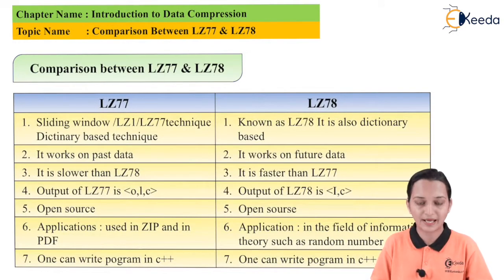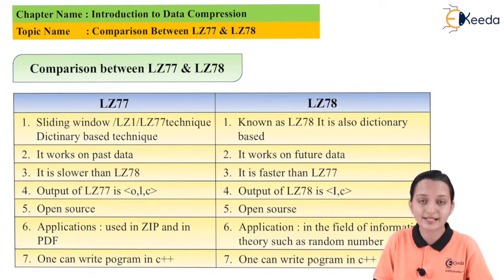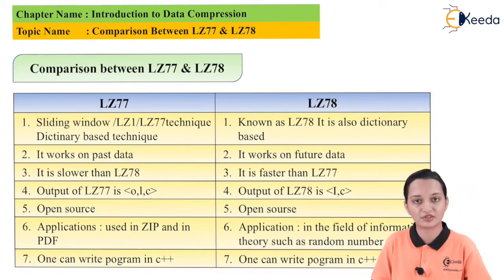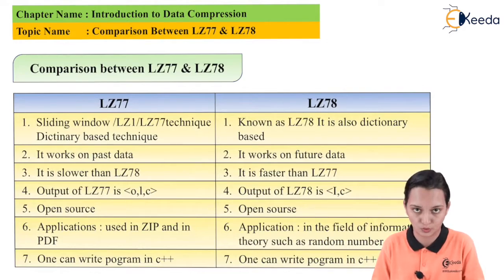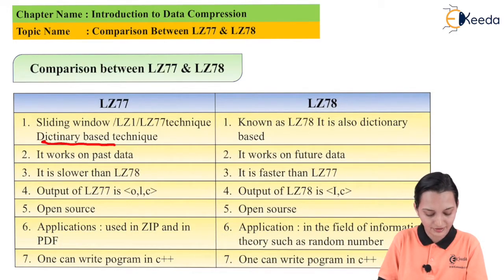Now we can see the comparison between LZ77 and LZ78 — this is a frequently asked question. First: LZ77 is known as Sliding Window, LZ1, and LZ77. Second point: it is a dictionary-based technique. Why dictionary-based? Because already a string of characters — that means a dictionary of characters — is given and provided to you. Using that particular dictionary, we try to encode the data. So simply, it is a dictionary-based technique.